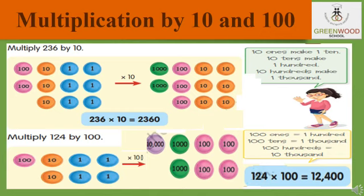Now look at the second example: multiply 124 by 100. Again split the number 124 — 1 hundred, 2 tens, and 4 ones. Now each and every digit gets multiplied by 100. So 100 into 100 becomes 10,000; 10 into 100 becomes 1,000; and 1 into 100 is 100. When we get the total of all this, we get 12,400.